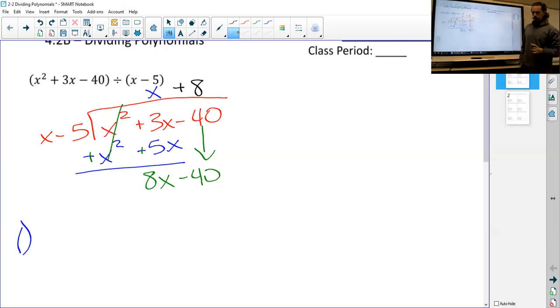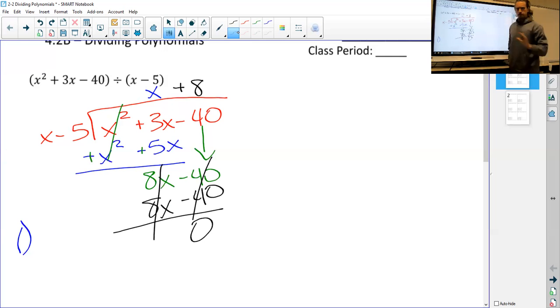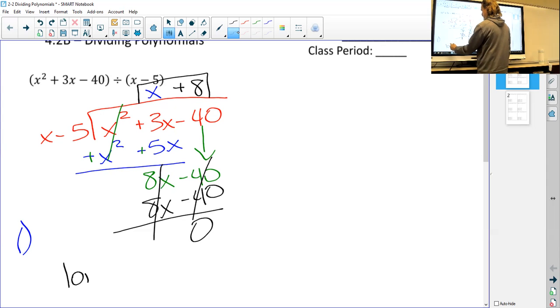This is what we're looking for: we don't want any remainders. When we work this out we should have nothing left over at the end. So 8 times x is 8x, 8 times negative 5 is negative 40. That's perfect, everything cancels out, there's no remainder. This becomes our answer: x squared plus 3x minus 40 divided by x minus 5 is x plus 8. This is long division, it's the actual name of it.